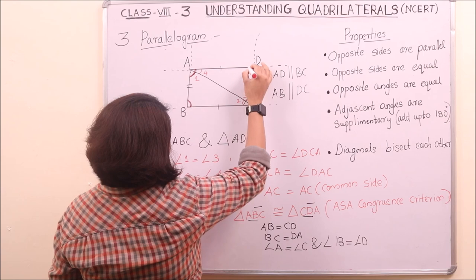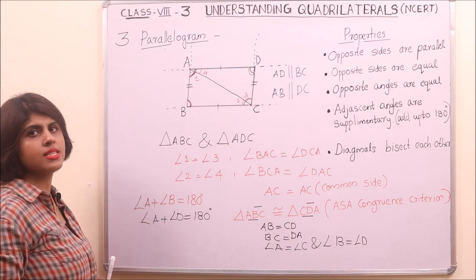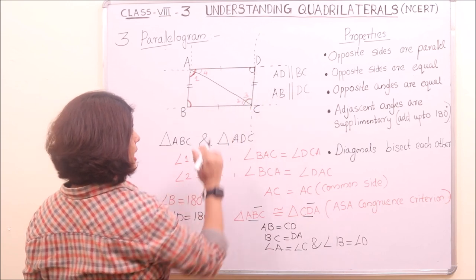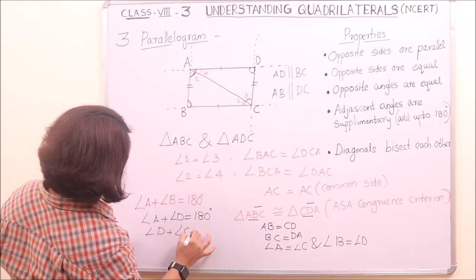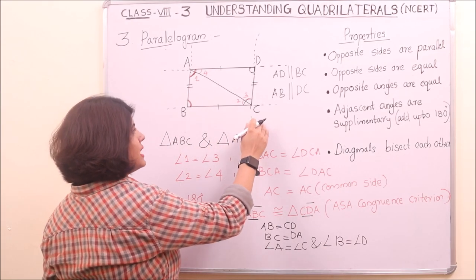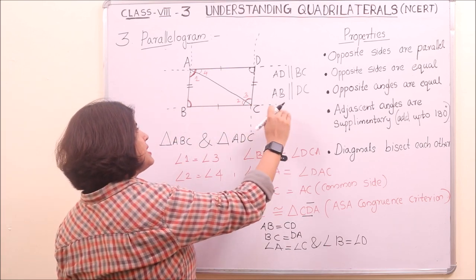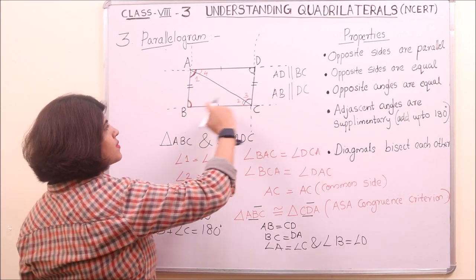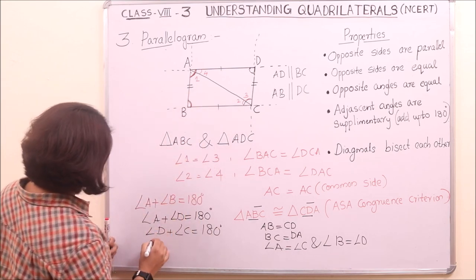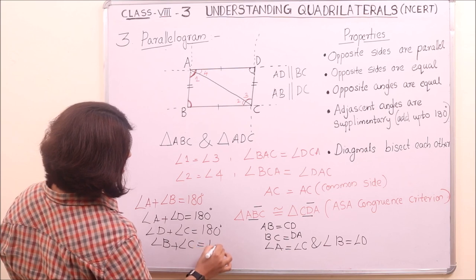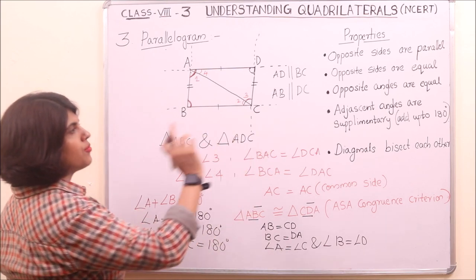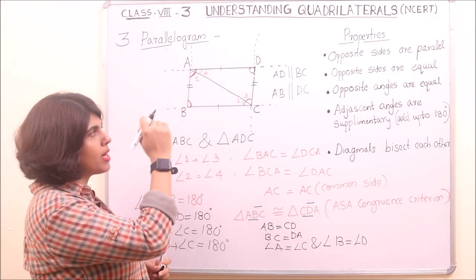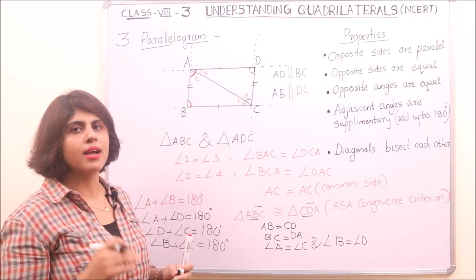Similarly, angles D and C are adjacent angles. Considering CD as the transversal, by the property of transversals we can say angle D plus angle C equals 180 degrees. And if we consider side BC as a transversal line, by the property of transversal lines, angles on the same side are supplementary, so angle B plus angle C equals 180 degrees. Thus the fourth property — adjacent angles are supplementary — has been proved.